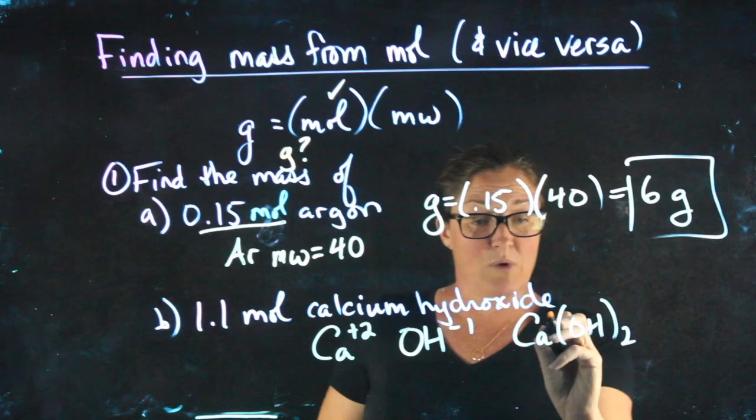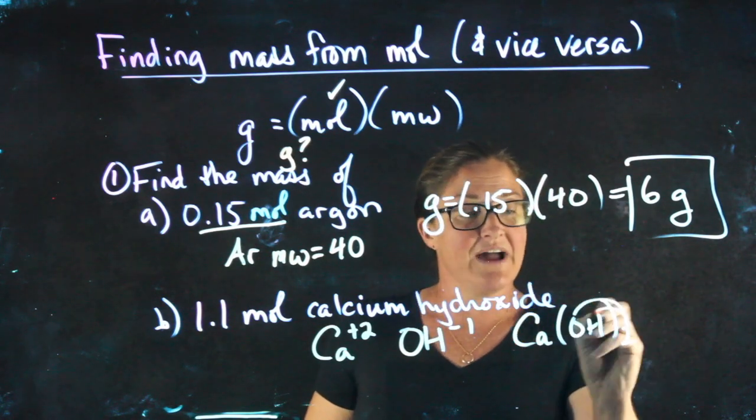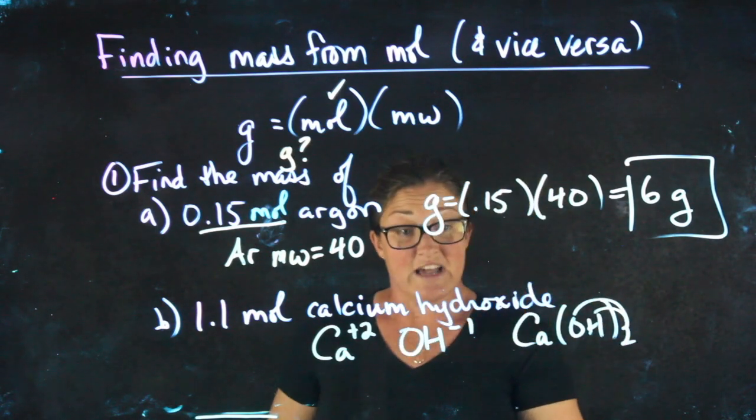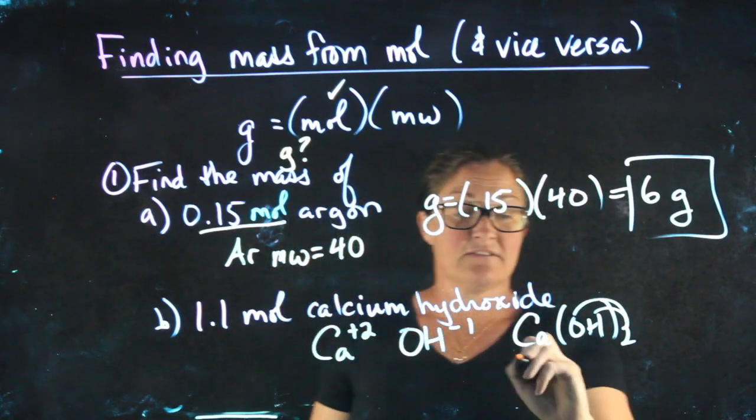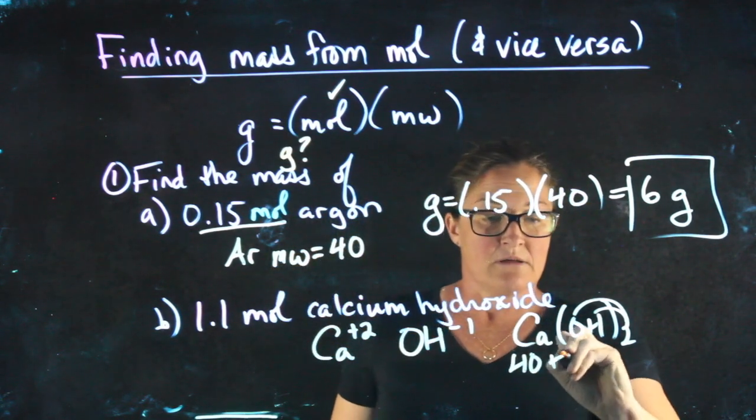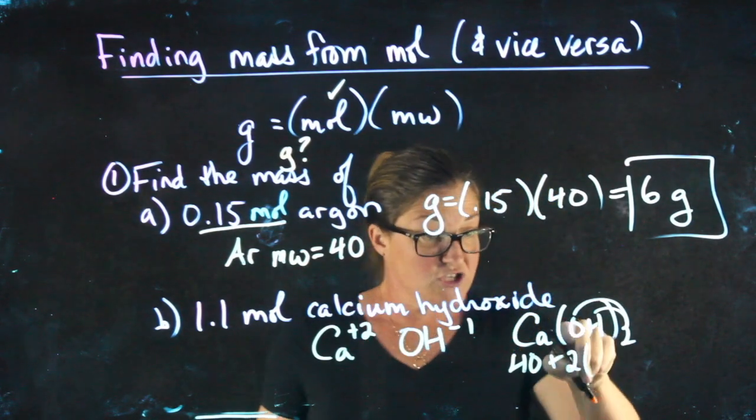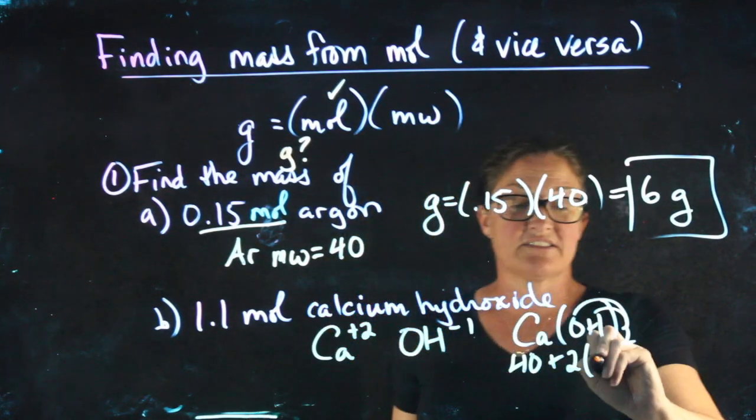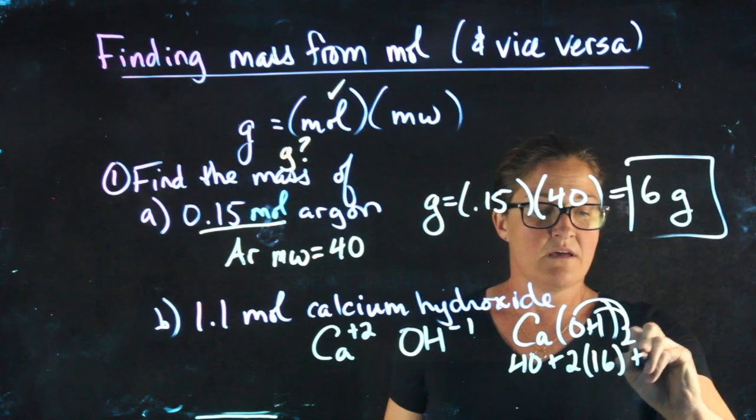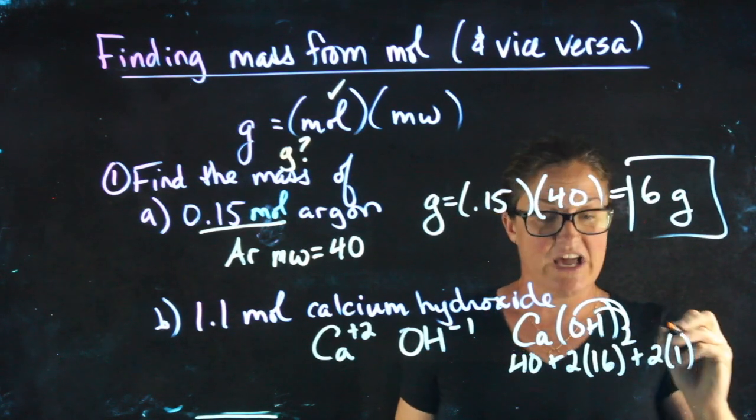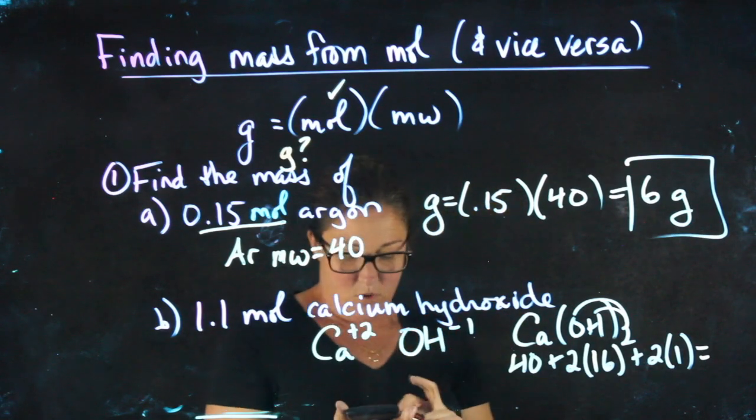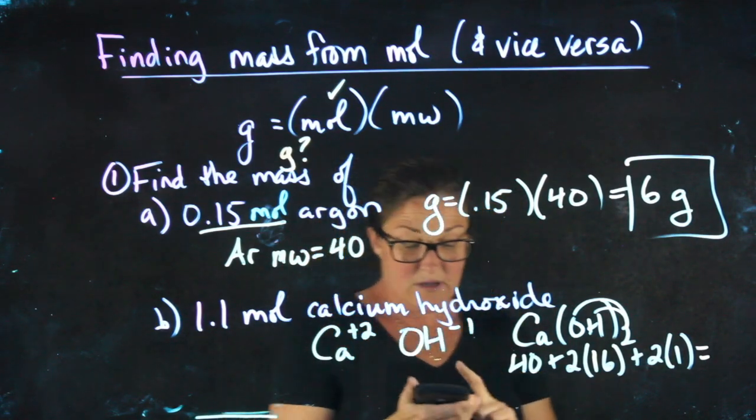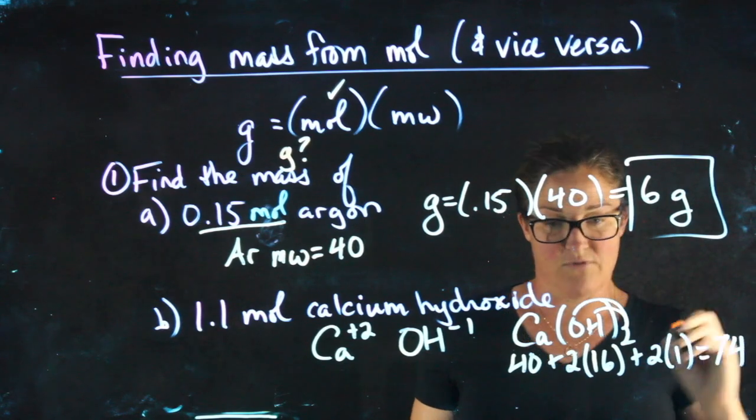When I'm finding the molecular weight, this 2 is going to apply to oxygen as well as hydrogen. Molecular weight of calcium is 40. I have 2 oxygens, each oxygen is 16, and I have 2 hydrogens, each hydrogen is 1. Adding 40 + 32 + 2 gives me a total of 74.